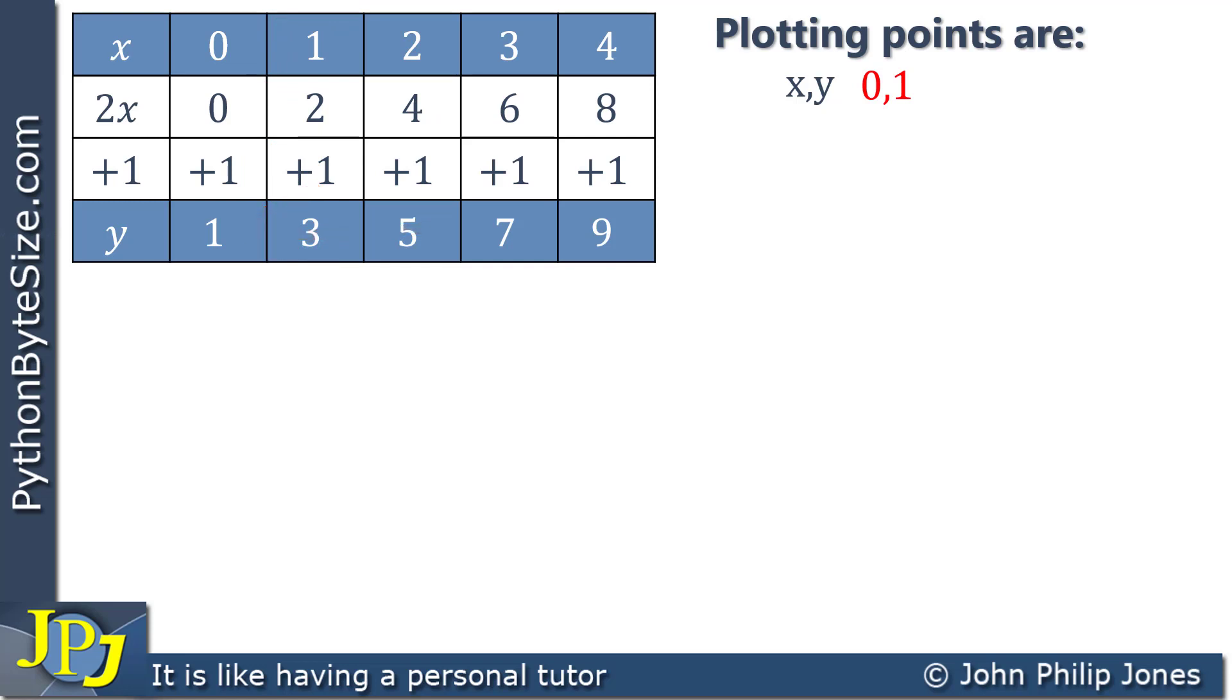The next thing we can move along to is this. When x is 1, y is 3, so that would be 1, 3, as we can see here. Moving along, we can see that this is when x is 2, we have y is 5, so we can look and we have 2, 5.